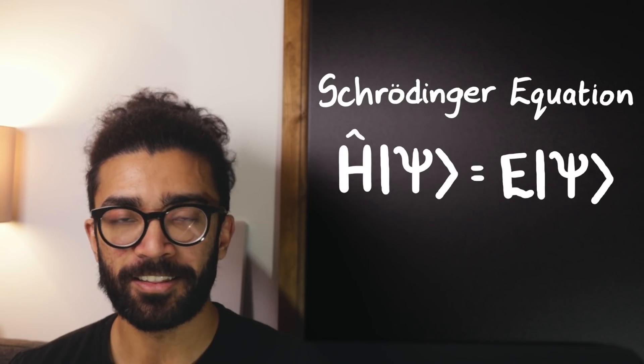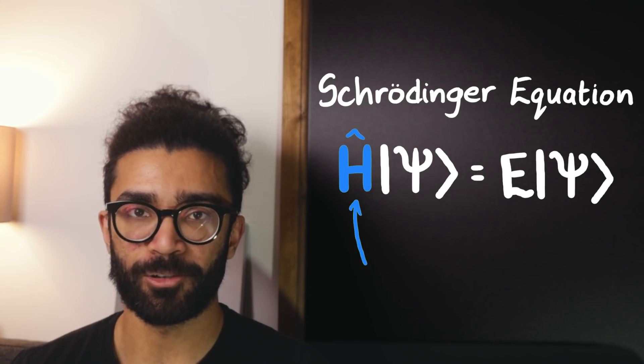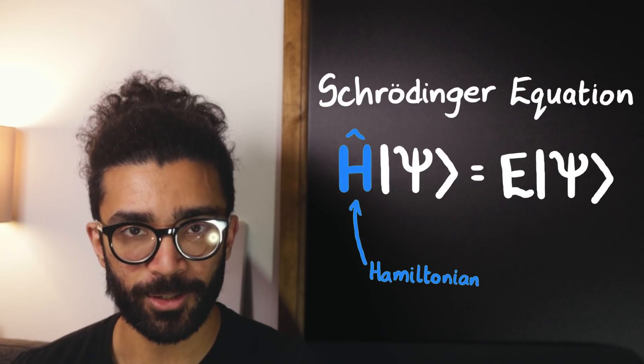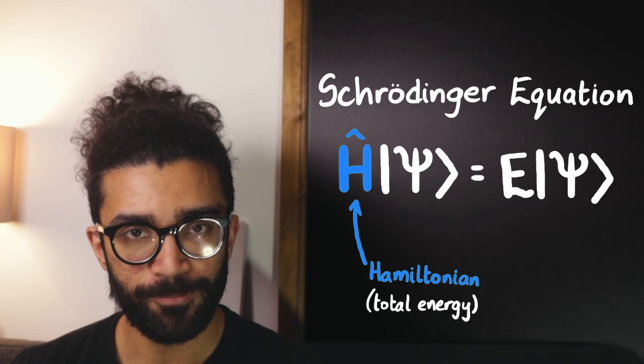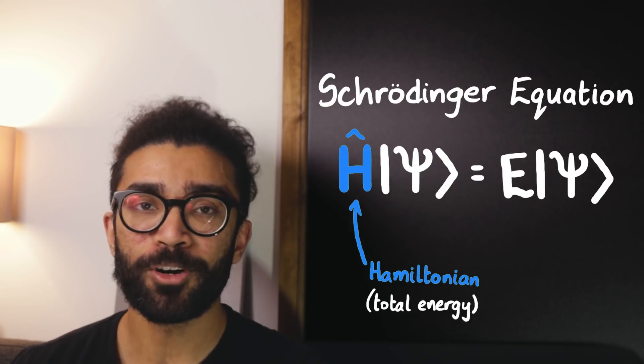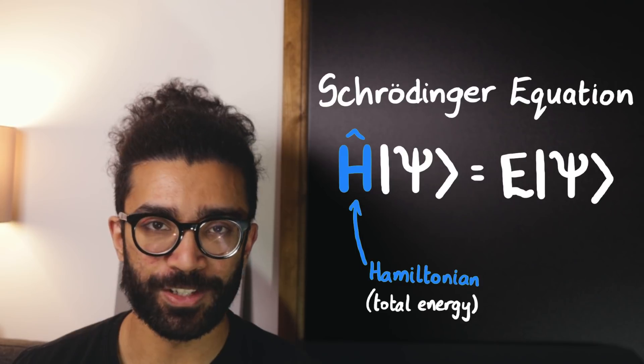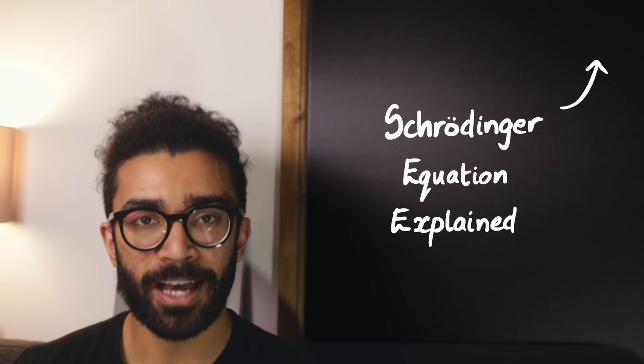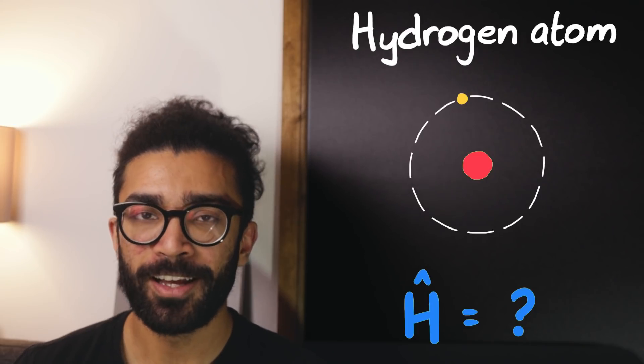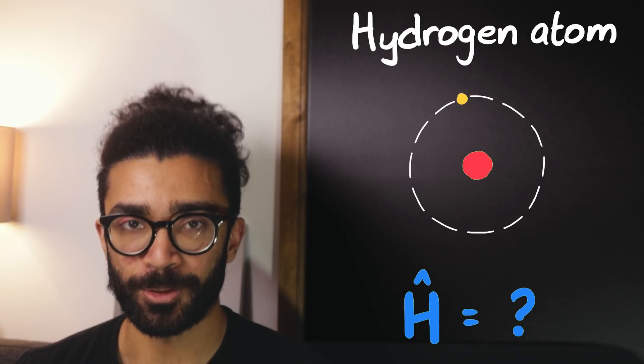To begin, let's understand that this term in the generic Schrödinger equation is known as the Hamiltonian. The Hamiltonian is very closely related to the total energy of any system we happen to be considering. For more information on this, as well as the whole equation in general, please do check out this video on my channel. But in order to find the Hamiltonian for a hydrogen atom, let's start by considering its total energy.